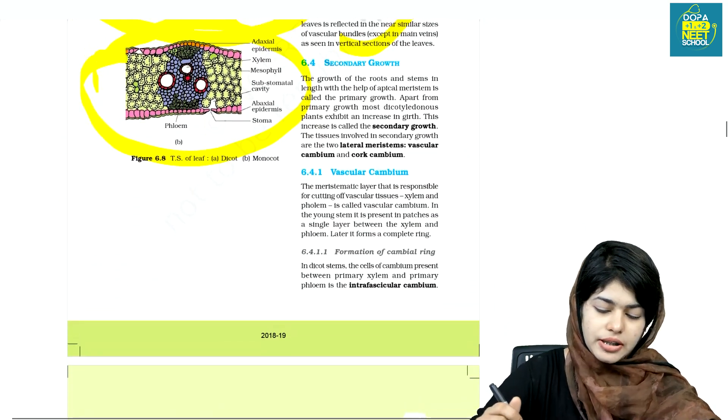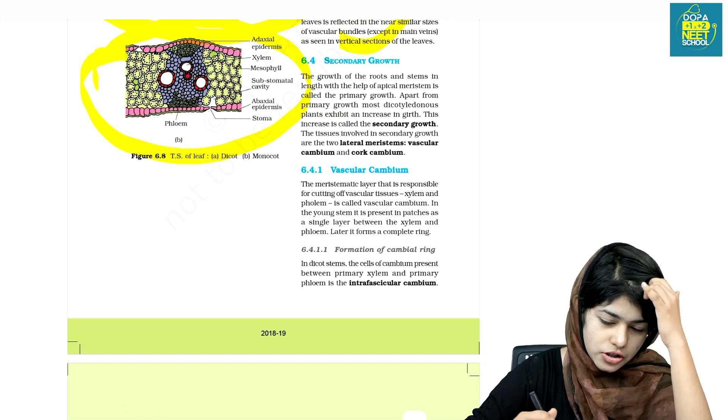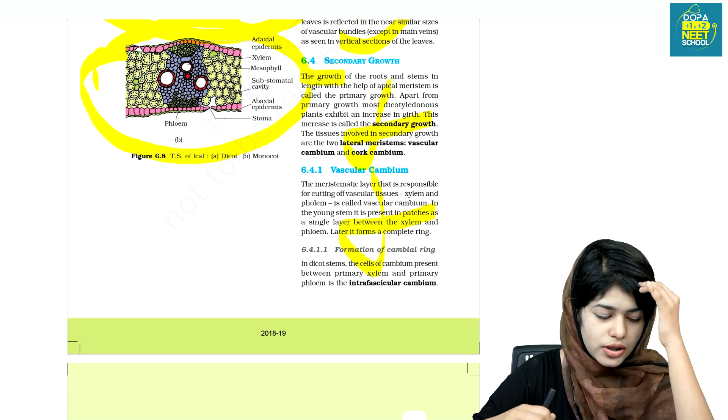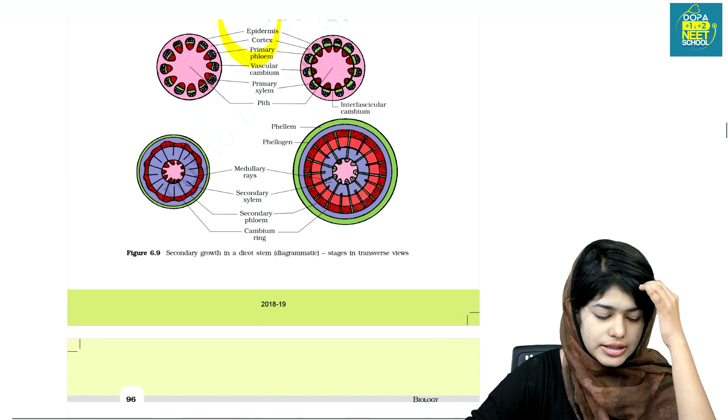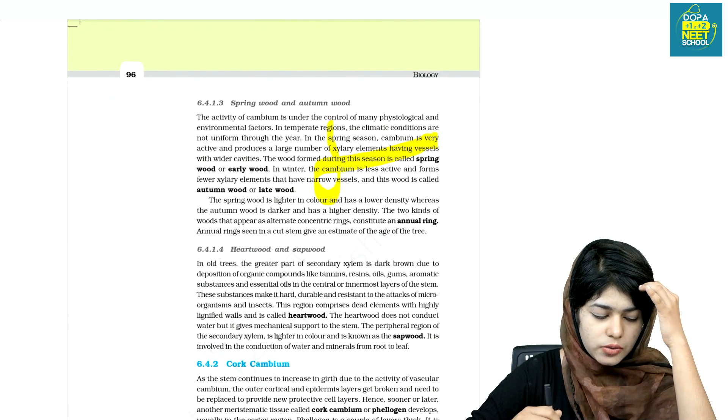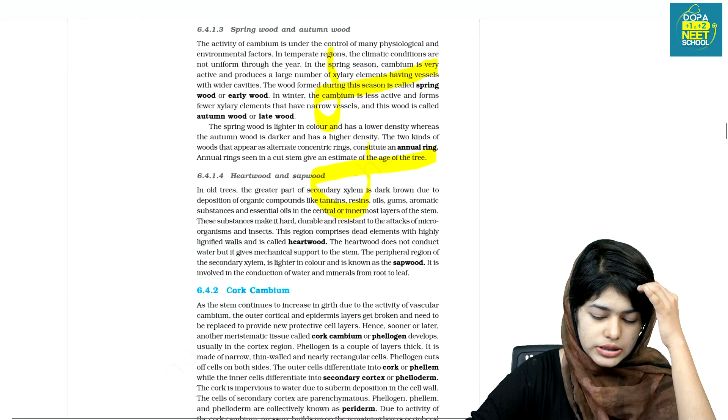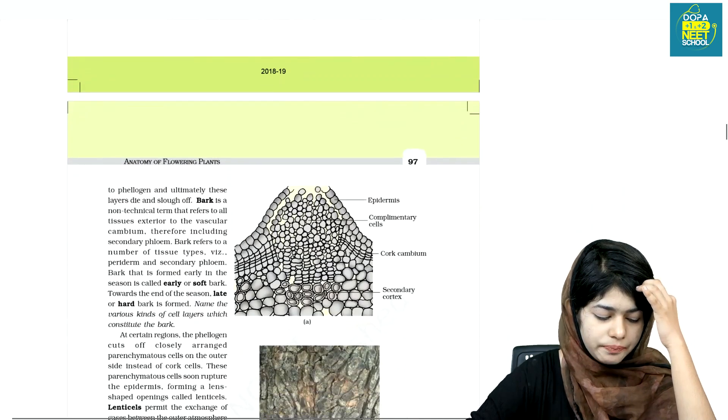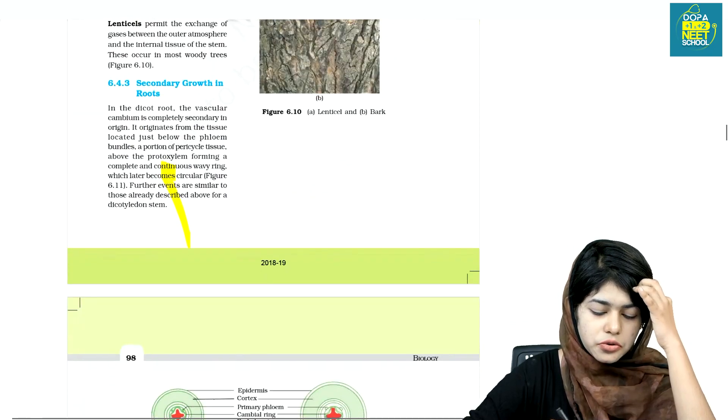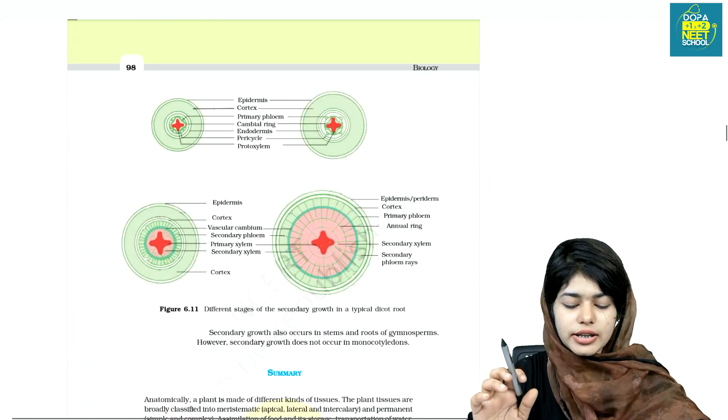We will study secondary growth. You will study vascular cambium, activity of cambium, spring or autumn, heartwood and sapwood. You will study secondary growth and roots. You will study the chapter in this chapter.